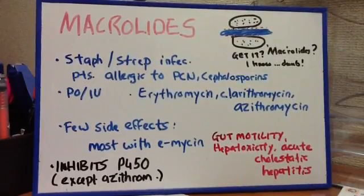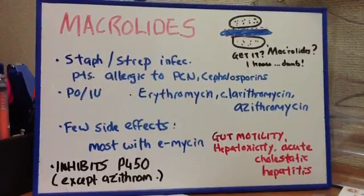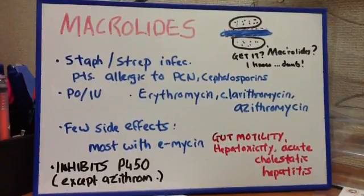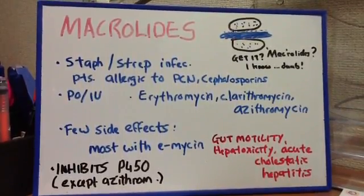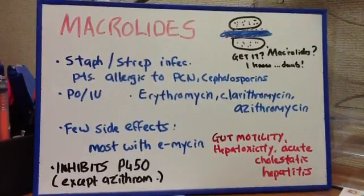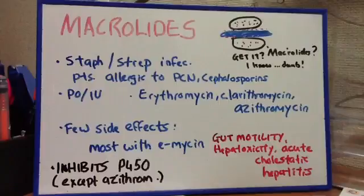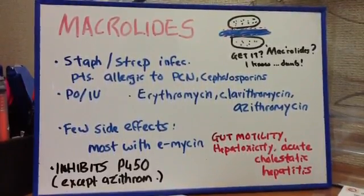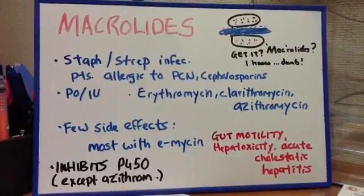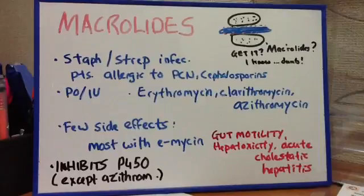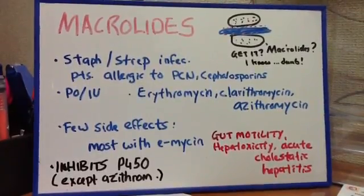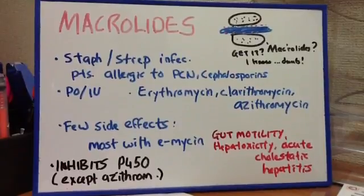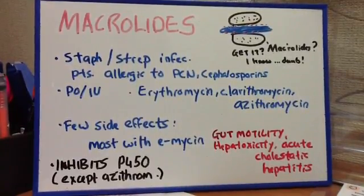Looking at the side effects, there are problems with gut motility, hepatotoxicity, and acute cholestatic hepatitis. One of the main things here is that it inhibits cytochrome P450 in the liver, so it's not going to be metabolizing drugs so well. This is going to be a problem if you are taking theophylline for your lungs, warfarin, cyclosporine, methylprednisone, or digoxin for your heart, as it's going to slow down the metabolism of these drugs.